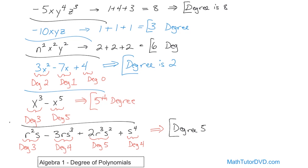There's really no point in doing any more problems because they're all done the same way. You just look at each term, find the degree of each term by simple addition, and figure out which is the largest — and then you know it's a fifth degree, or third degree, or sixth degree polynomial. Most polynomials you study are going to be second, third, maybe fourth degree. Make sure you understand this concept and follow along to the next lesson, where we'll continue talking about polynomials and algebra.